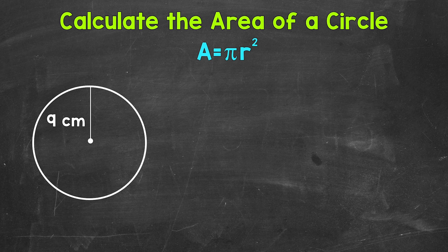Remember, area is the amount of space a two-dimensional figure takes up, and we measure area in square units — how many square units does a given figure take up, or how many square units to cover the given figure. The formula we use for the area of a circle is area equals pi r squared — pi times the radius squared.